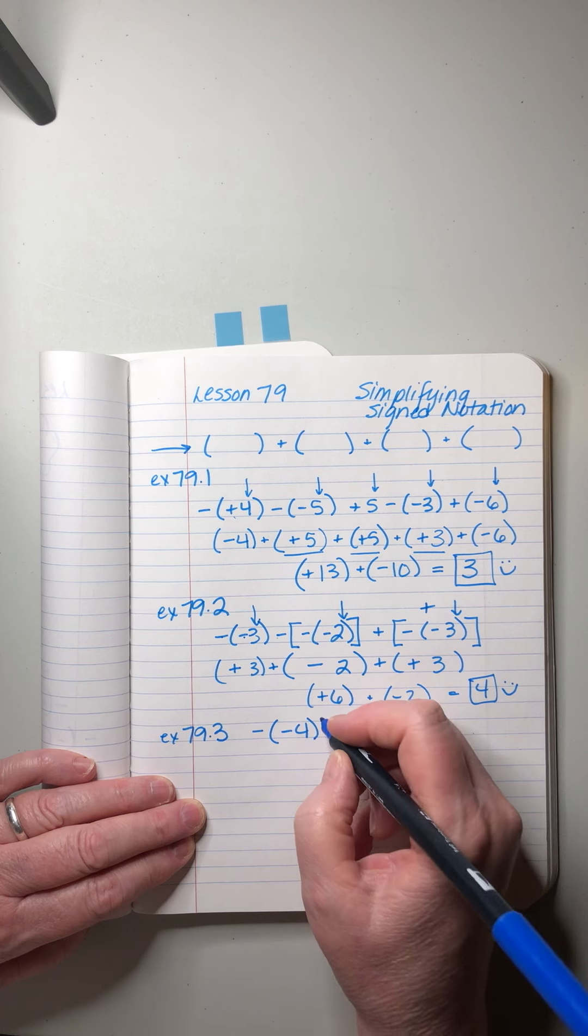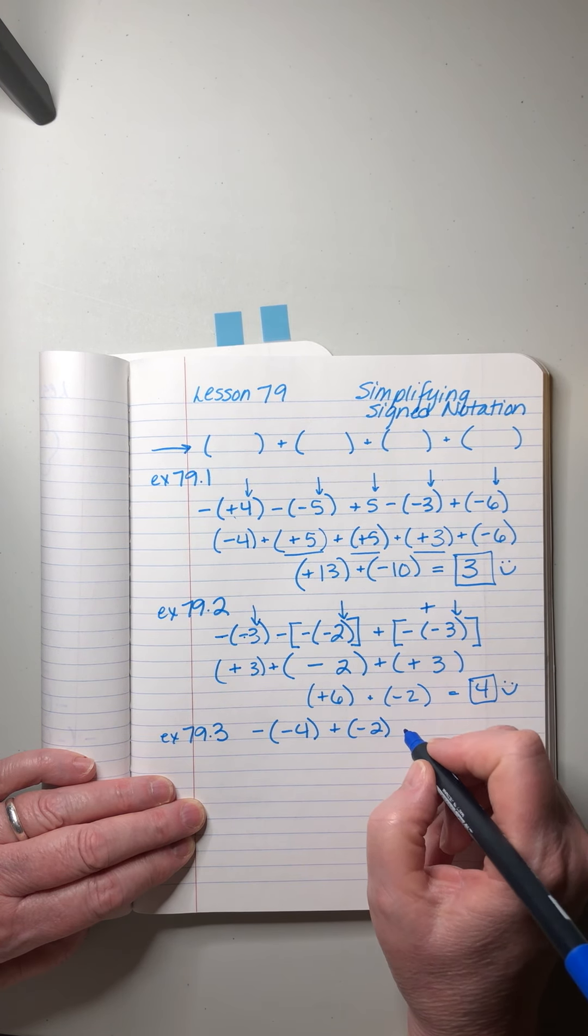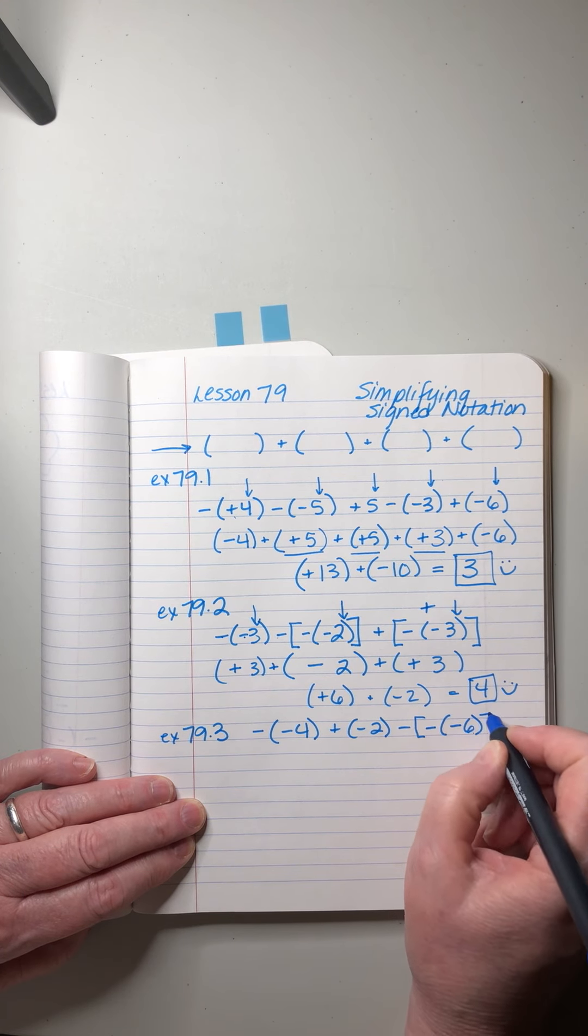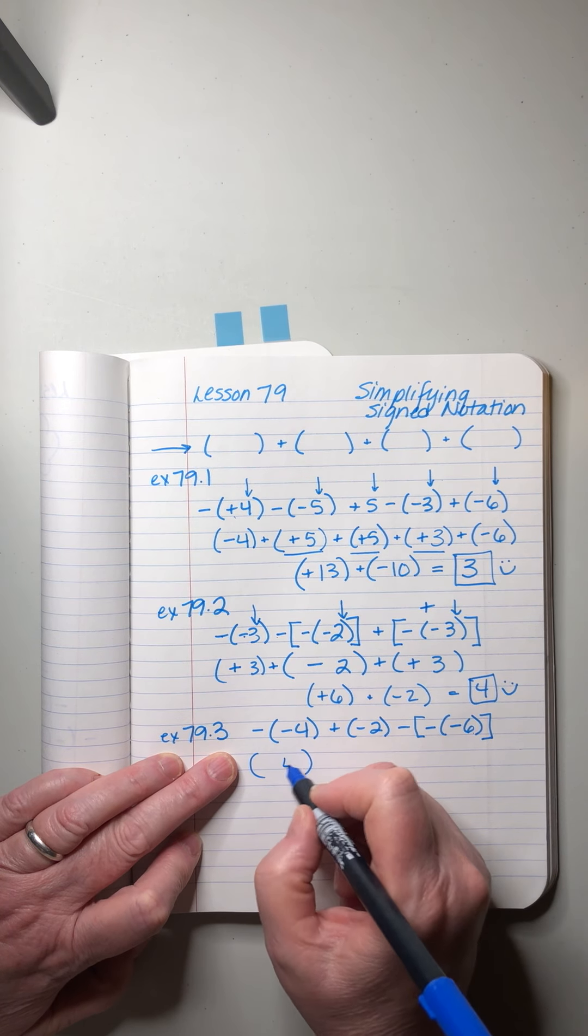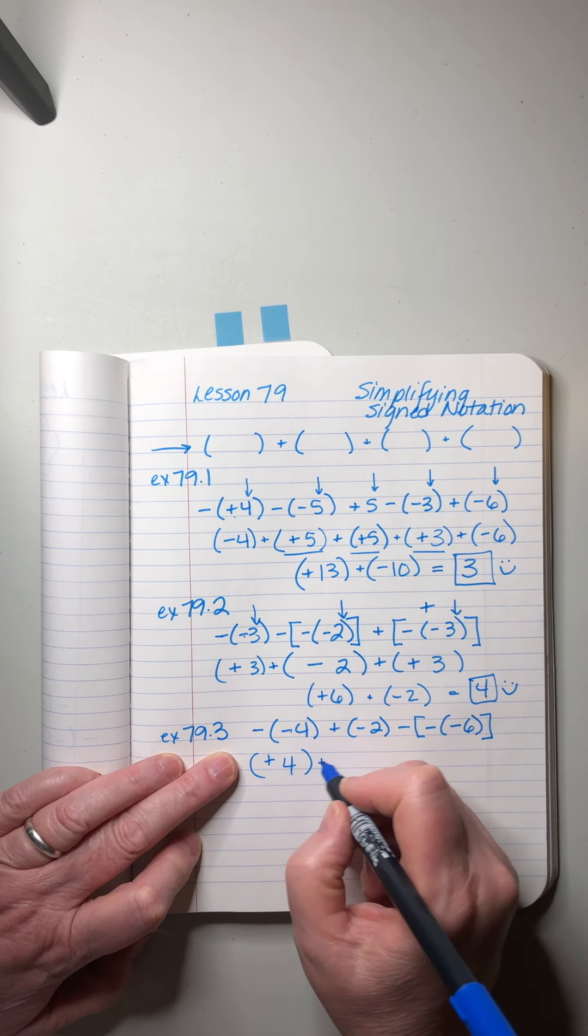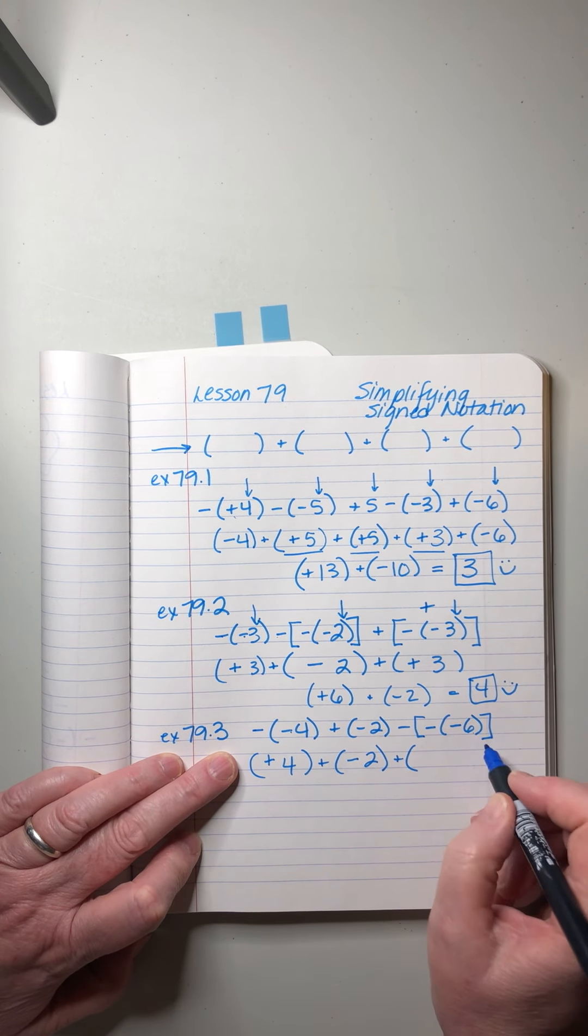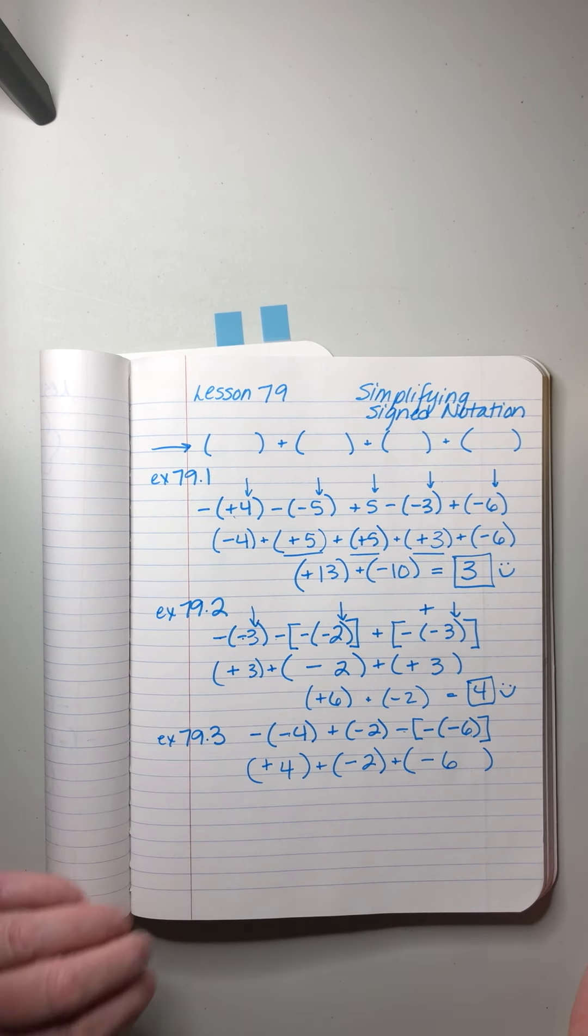79.3, again I'm writing it down just as it's written, you need not. Okay, first one, four, two minus signs make a plus. Plus, oh this one's neat and tidy.